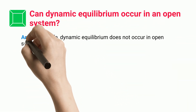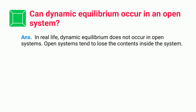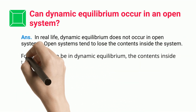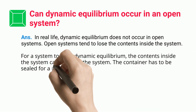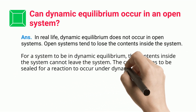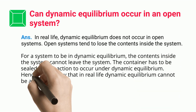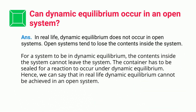Can dynamic equilibrium occur in an open system? In real life, dynamic equilibrium does not occur in open systems. Open systems tend to lose the contents inside them. For a system to be in dynamic equilibrium, the contents inside the system cannot leave — the container has to be sealed for a reaction to occur under dynamic equilibrium.